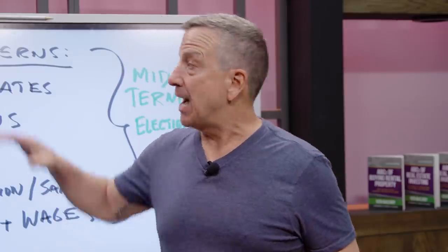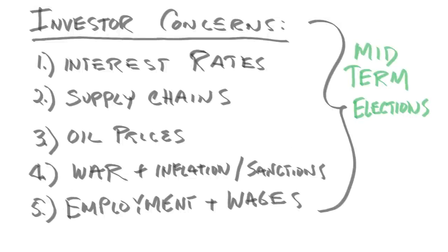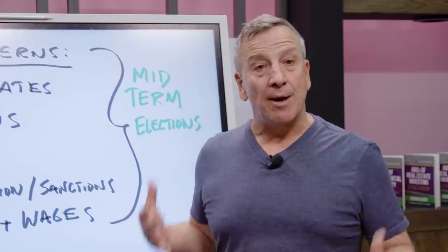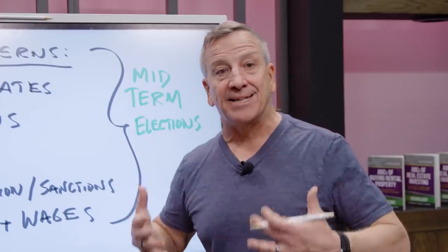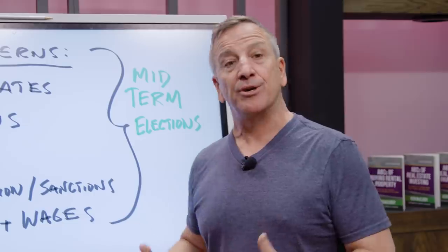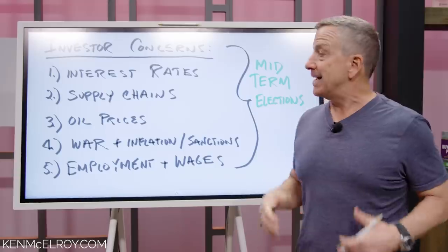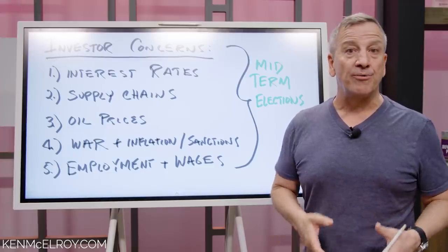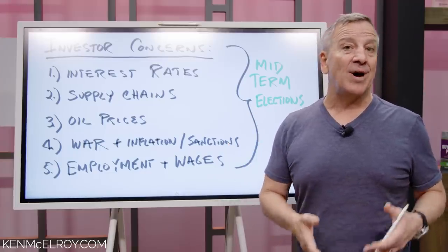As an investor, I'm concerned about the following: interest rates, supply chains, oil prices, war, and inflation — which we really haven't fully seen yet from the war and resulting sanctions — as well as employment, underemployment, and wages. As we roll into these midterm elections, all of these are going to become very important. On my YouTube channel I continue to get lots of questions from subscribers. Investors need to be tuned into whether the Fed is going to continue raising interest rates and slow down the economy, because if it does, we are definitely going to see less consumption, less GDP, and we could move into stagflation.